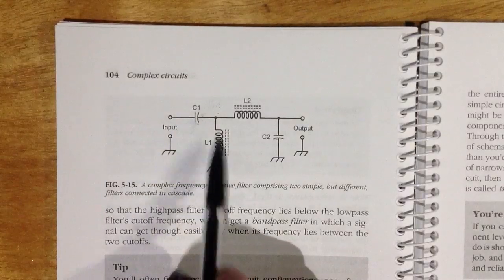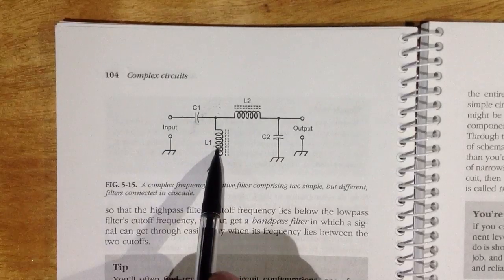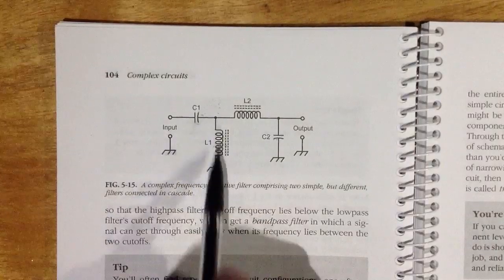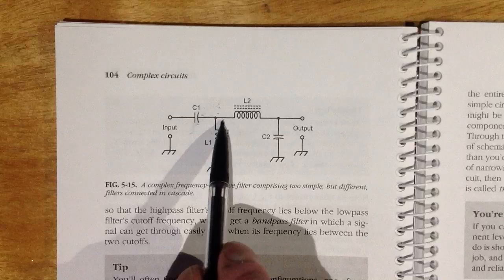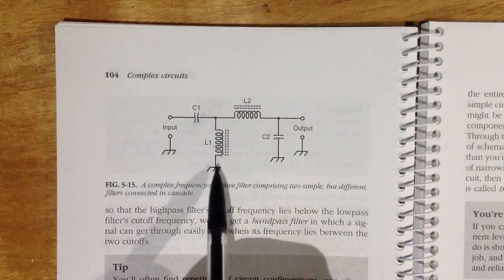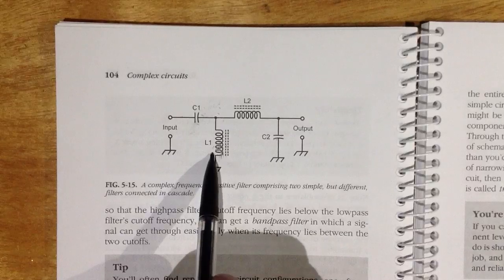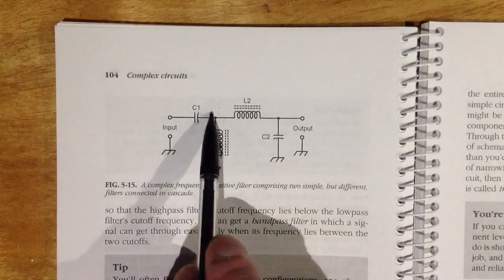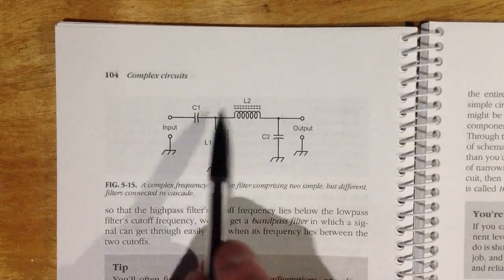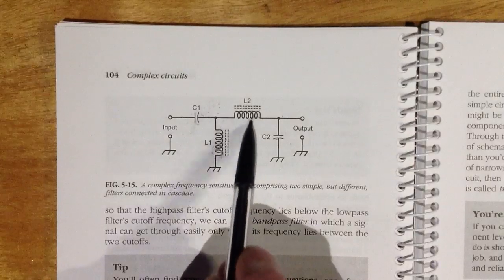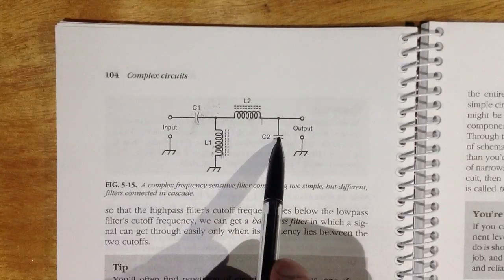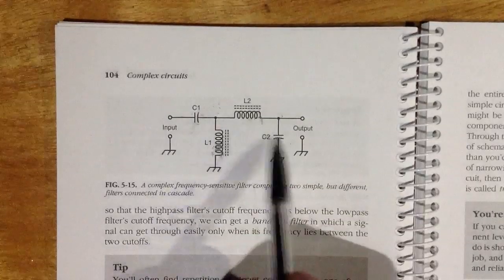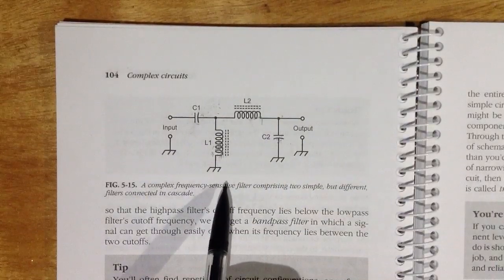So this combination L1 and C1 tend to form a high-pass filter because it passes the high frequencies this way and tends to short out the low frequencies this way. So these two conspire to pass high frequencies. Whereas this combination right here, the inductor tends to suppress signals more and more as the frequency goes up and let them pass more and more easily as the frequency goes down. This capacitor will short signals out more and more as the frequency goes up and short them out less and less as the frequency goes down, so they conspire to form a low-pass filter.